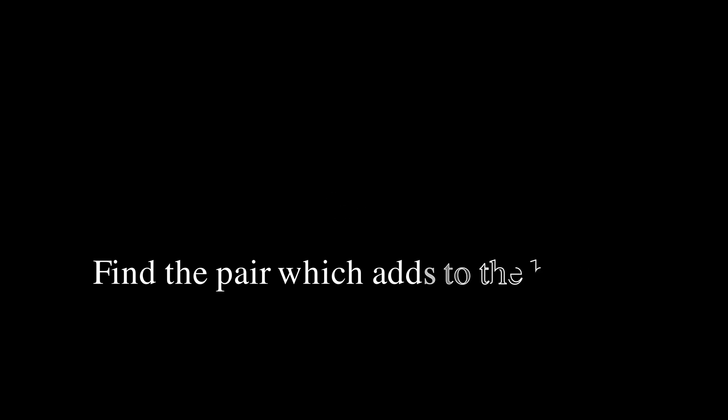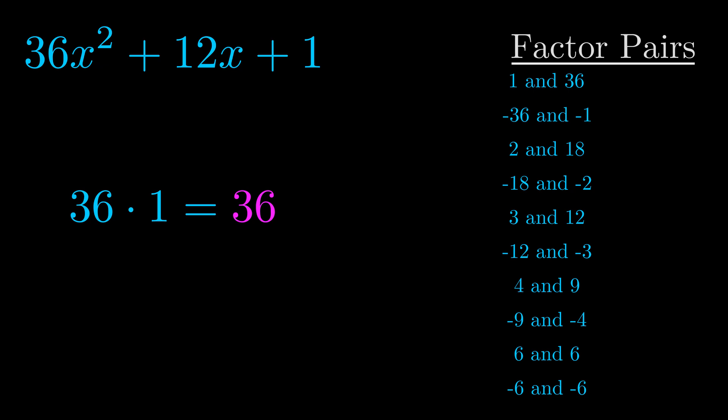The b value is the coefficient on the x term. That's the middle term, the one that we haven't done anything with yet. And really this is the only factor pair that we need.